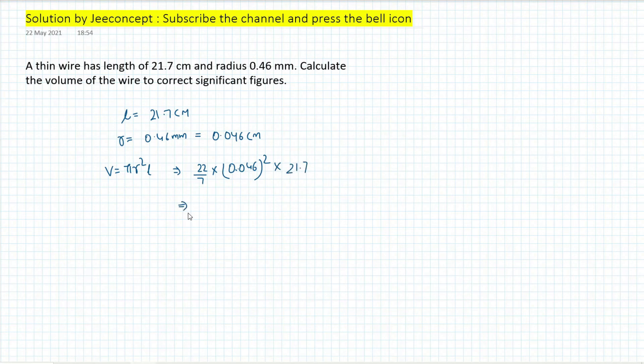So this calculation will become 0.1443. Now we will round off at minimum significant digit, which is only 2 in 0.046. So answer will be up to 2 significant digits, which is 0.14 centimeter cube. So this is the solution of this problem.